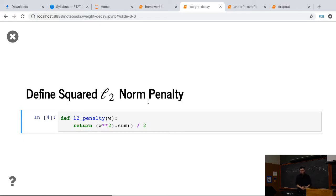Then define the squared L2 norm penalty, or regularization. So it actually is given W, power to 2, and the sum of the elements, and divided by 2. That's L2 regularization.